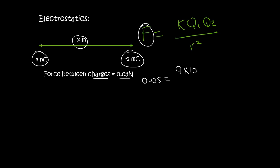So the force we now have as 0.05. K is a constant that is always going to be given to you. Q1 is 4 times 10 to the minus 9. And then Q2 is 2 times 10 to the minus 3. And remember, it doesn't matter which one of these you do first.